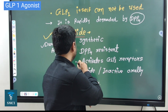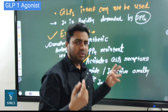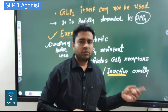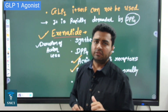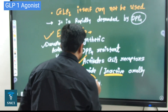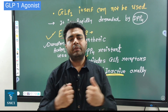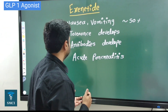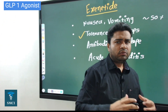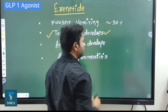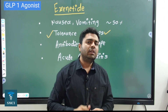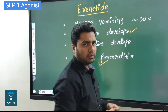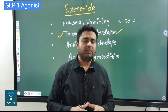Exenatide is a synthetic molecule that is not destroyed by DPP-4 — it is resistant to the DPP-4 enzyme. It binds with GLP-1 receptors and increases insulin release. However, it is inactivated orally so it must be given subcutaneously. The main problem with exenatide was its very short duration of action. Other problems include nausea, vomiting, and diarrhea. With longer use, antibodies develop against exenatide — a very big problem. Some cases of acute pancreatitis also developed. Exenatide is no longer commonly used.